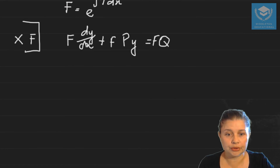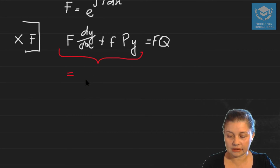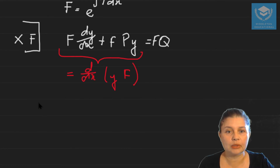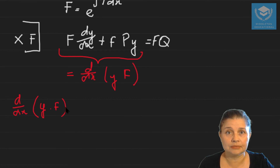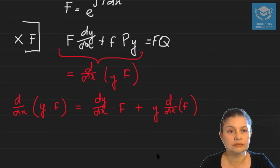At this stage, what I want to show you is that this expression here is in fact the same thing as the derivative of y times f. So if I have a function y times f and I take the derivative of that — this is a product — so when you differentiate it, you need to use your product rule. The product rule says you're going to have the derivative of the first function, which is dy/dx, times the second function, plus the first function times the derivative of the second function.